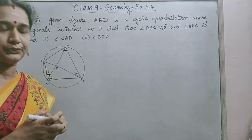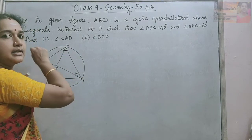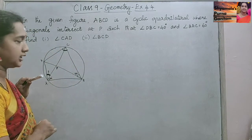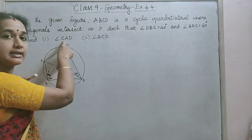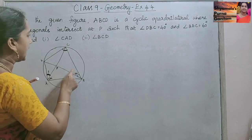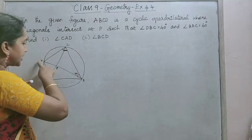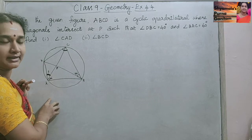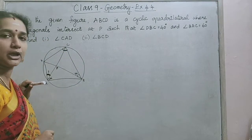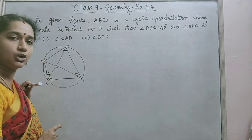For finding these, since ABCD is a cyclic quadrilateral, the four vertices of the quadrilateral touch the circle. For the first part, angle CAD: when we take CAD and CBD, these two angles are on the same segment. If we take CD as the chord, the remaining part is the major segment, and both angles lie in this major segment. We know that angles in the same segment are equal in measure. Since angle DBC is 40 degrees, angle CAD will also be equal to 40 degrees.